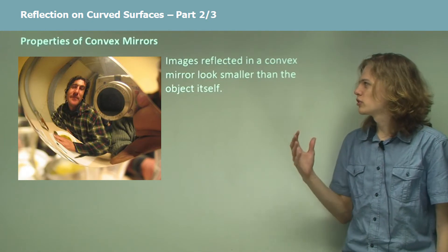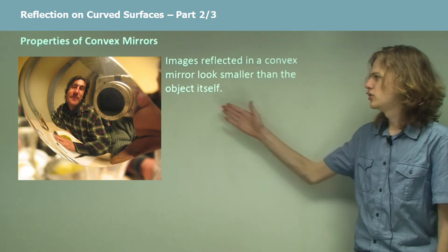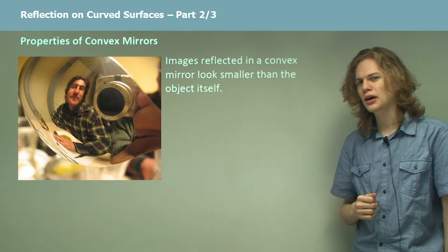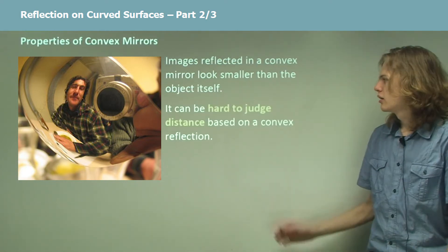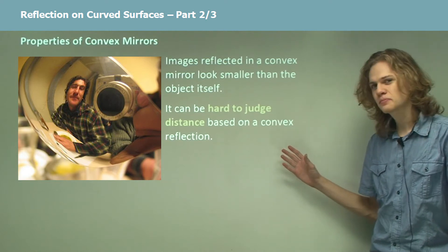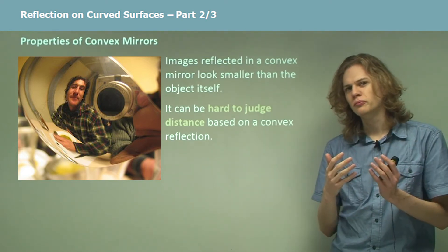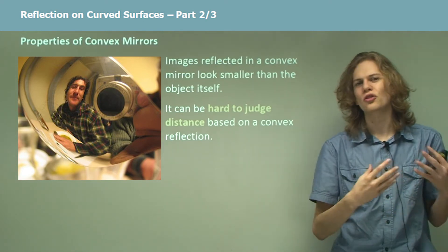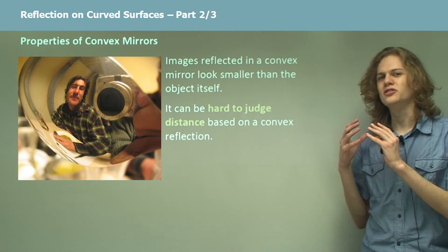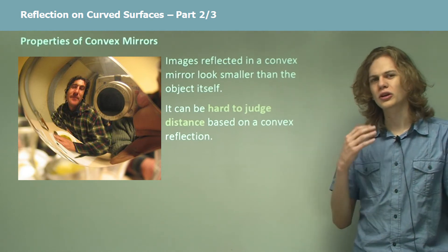Images reflected in a convex mirror look smaller than the object. We can see that in this photograph over here. The effect becomes more pronounced the further away we move. It can be very hard to judge distance because the objects inside are smaller. That means our brain thinks they're further away, even though they look closer to the mirror. It's this difference in size that tends to win out on depth perception.